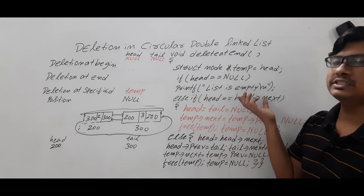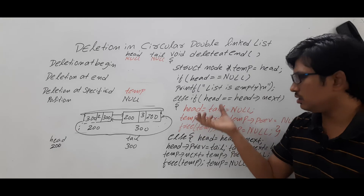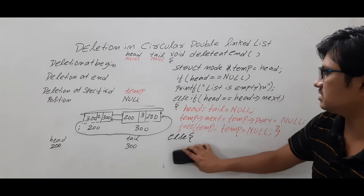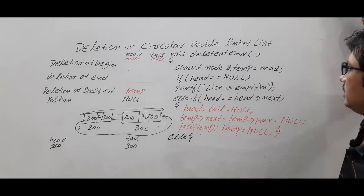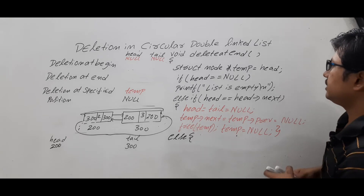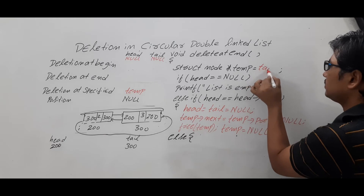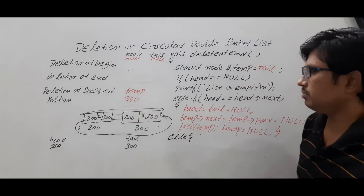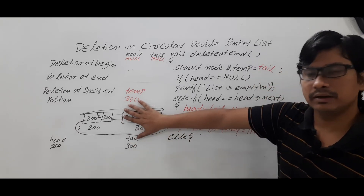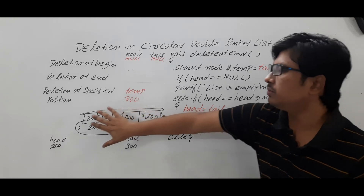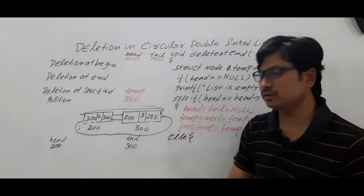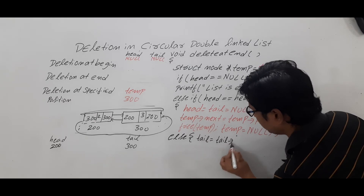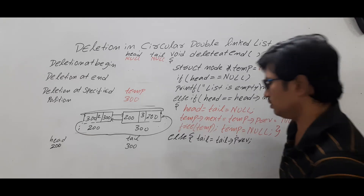For multiple nodes, instead of temp = head, write temp = tail. Now temp holds 300, pointing to the last node. If you delete this node, the second-to-last node becomes the new last node, so tail must be updated. Write tail = tail->previous. Tail was 300, 300->previous is 200, so now tail holds 200.